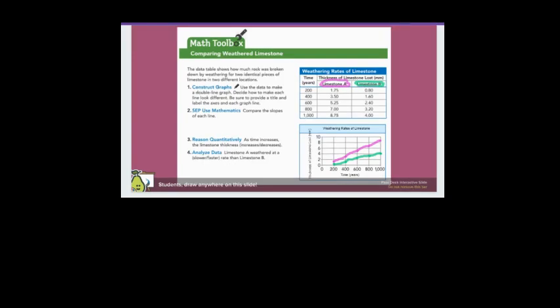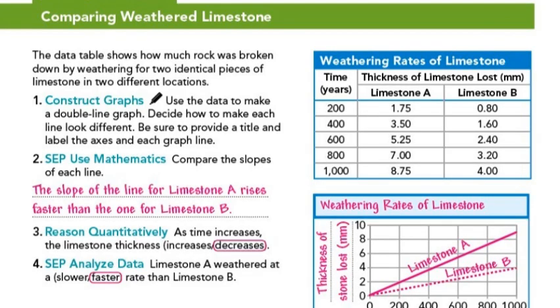Number two, SCP use mathematics. Compare the slopes of each line. Visually, we can see that the slope of limestone A is steeper than the slope of limestone B. Meaning the slope is greater for limestone A. So then we would write that the slope of the line for limestone A rises faster than the one for limestone B.